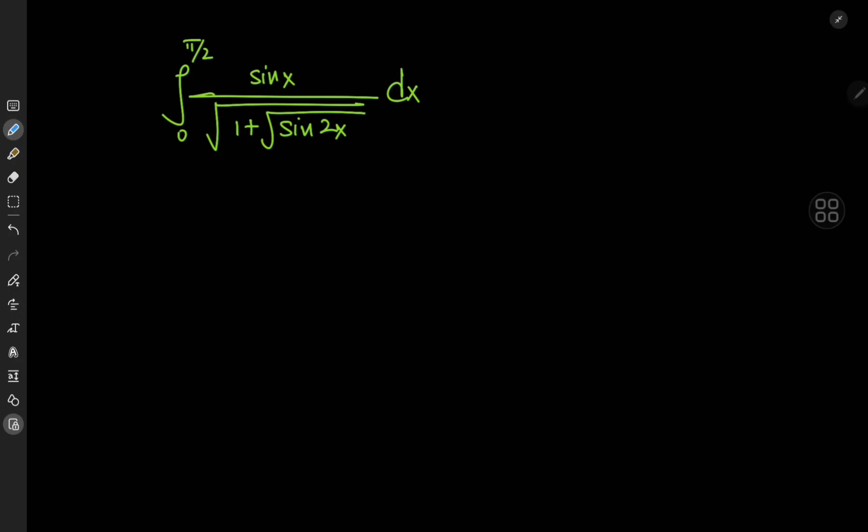Today we have this really interesting integral involving trigonometric functions and nested square roots. It's the integral from 0 to π/2 of sin(x) divided by the square root of 1 plus the square root of sin(2x). Since we have an interval of integration from 0 to π/2 and trigonometric functions, a phase shift seems feasible and is normally pretty useful in these kinds of structures.